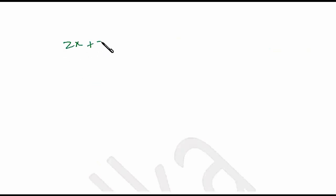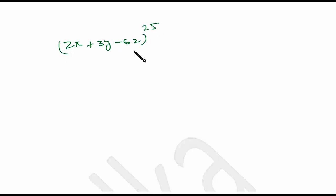The same rule can be extended to other expressions. Suppose I have (2x + 3y − 6z)^25.